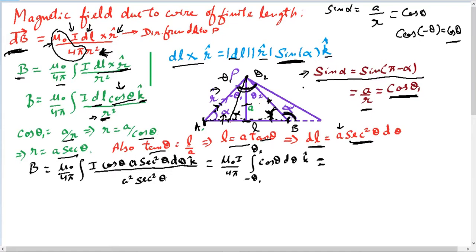Now substituting into the integral: I have cosine theta from before, then dL as a sec squared theta d theta, and R squared as a squared sec squared theta. The sec squared theta in the numerator and denominator cancel to give a ratio of 1. After removing those terms, and taking I out since current is constant in the wire, I am left with mu naught I over 4 pi times the integral of cosine theta d theta, times unit vector K.